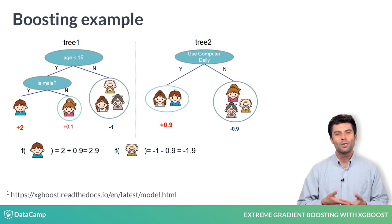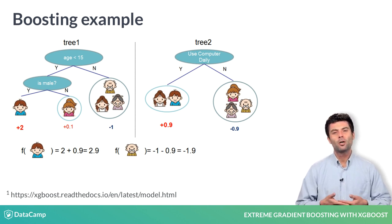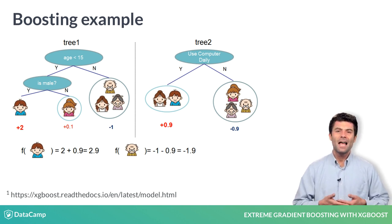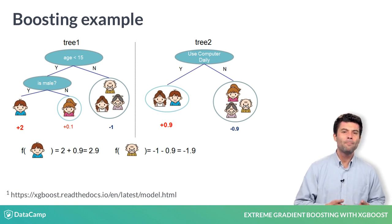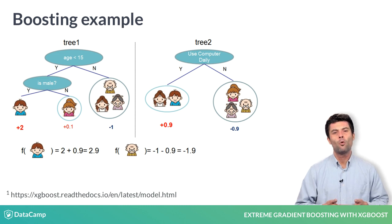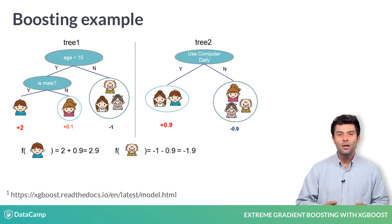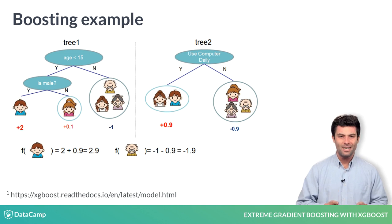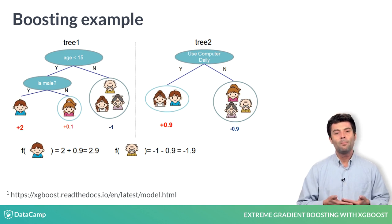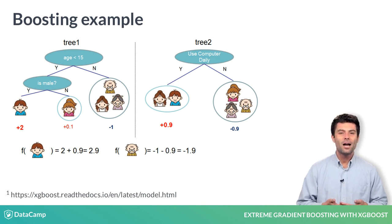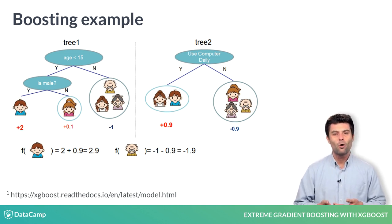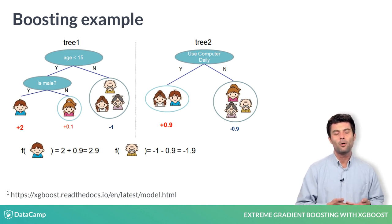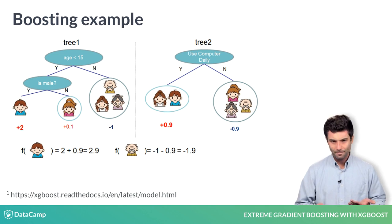The prediction scores for each possibility are summed across trees, and the prediction is simply the sum of the scores across both trees. Here, you can see that whatever it was we were trying to predict, the little boy had a higher predicted score summed across both trees than the old man.